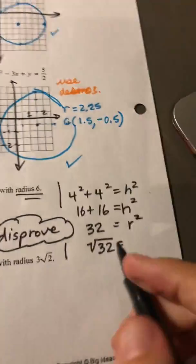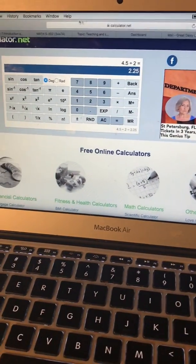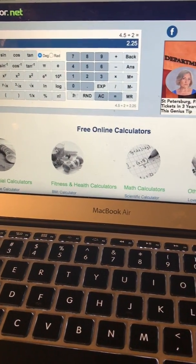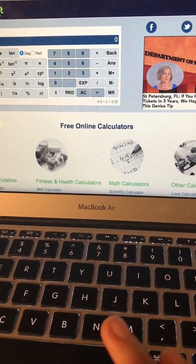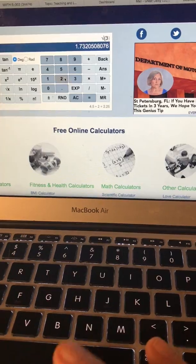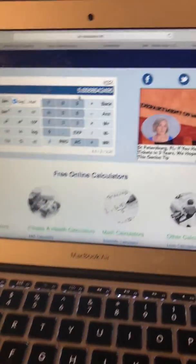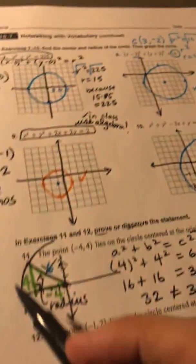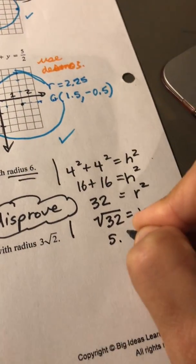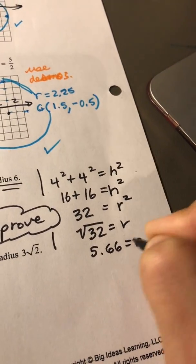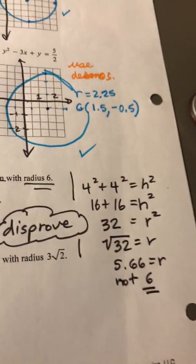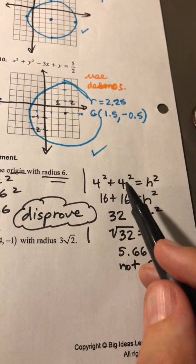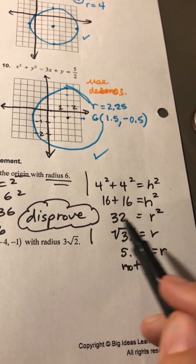it would not be 6. It would be the square root of 32. So using our online calculator, the square root of 32 is 5.65. So 6 is pretty close, but not quite. 5.66 would be our radius, not 6. So we've disproved that. Because 4 squared plus 4 squared is not 36, it's 32.